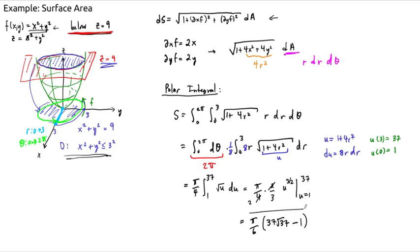Okay, and we're going to leave it just like this for this problem. That's pi over 6 times 37 root 37 minus 1. Or you could leave this as 37 to the 3 halves power. That's the surface area of the paraboloid below this plane.